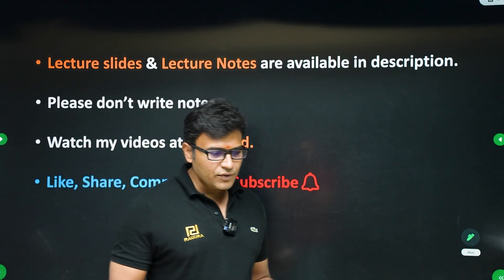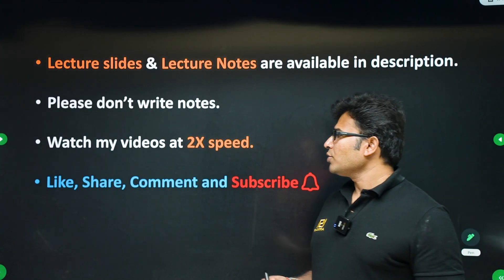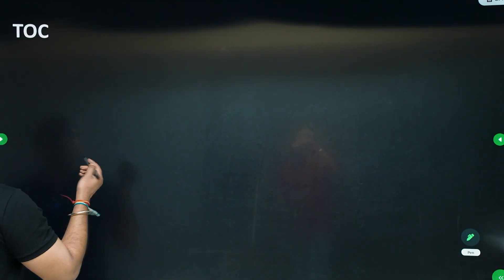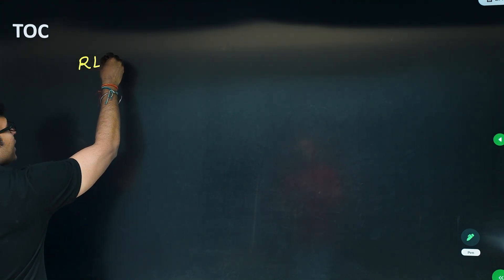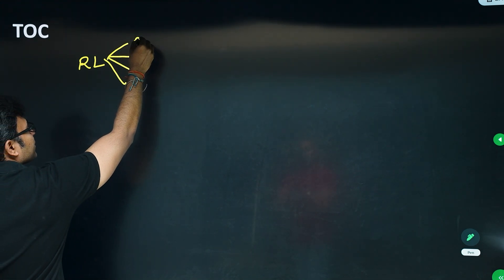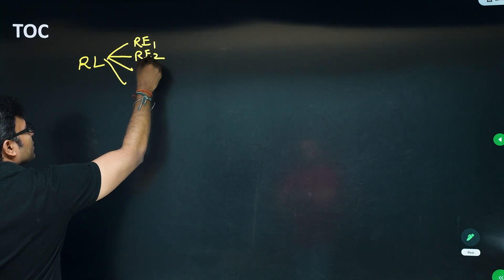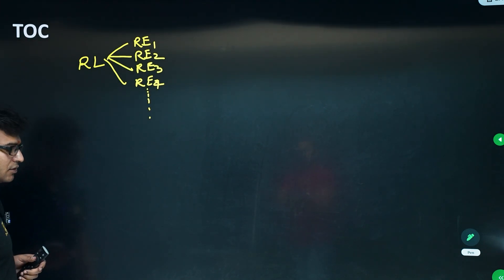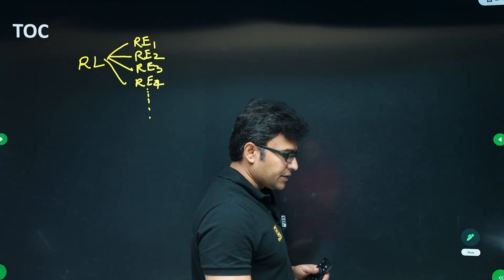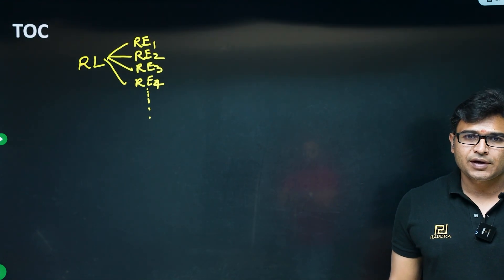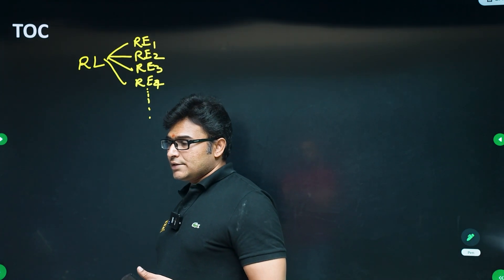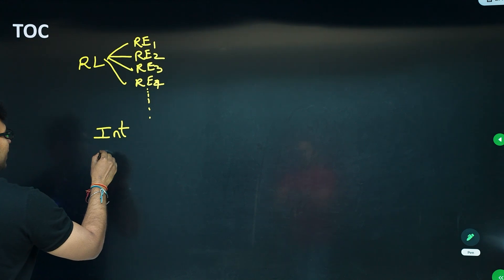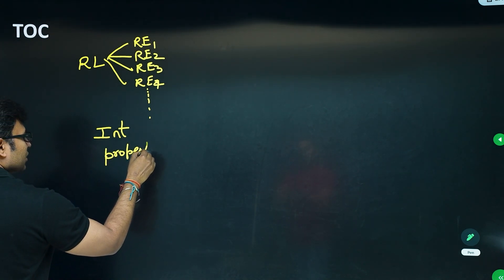What is this lecture about? For a regular language there can be many regular expressions. The question is: whenever you come up with a regular expression, how do you know whether it is right or wrong? It is a very difficult question. You should use intuition, properties, and trial and error.